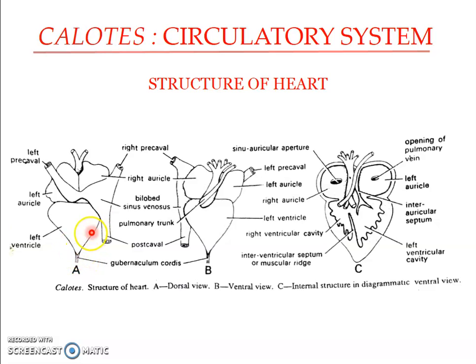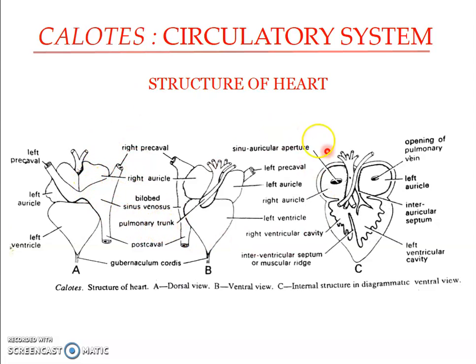The apex of the heart, or the ventricle, is attached to the liver by a thin cord of tissue referred to as the gubernaculum cordis. This is what we can observe externally. Now we will look into the internal structure of the heart.